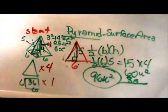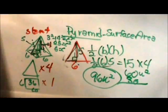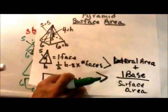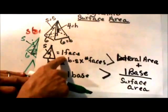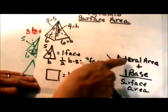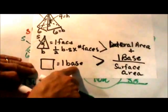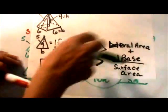And there you go. That is how you find the surface area of a pyramid. So here we go. We take the area of one face and we multiply it by the number of faces and that gives us our lateral area. Then we add one base to it to get the whole surface area.